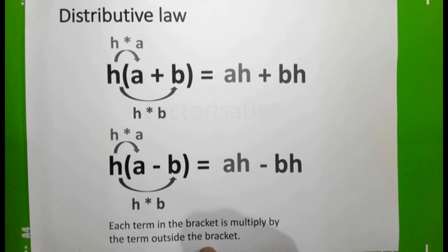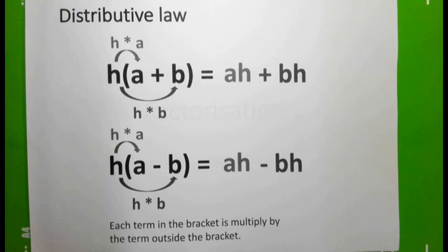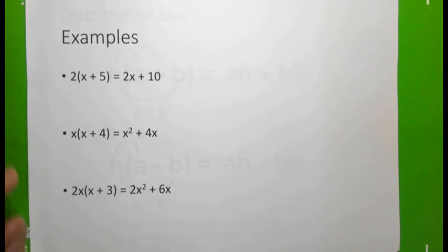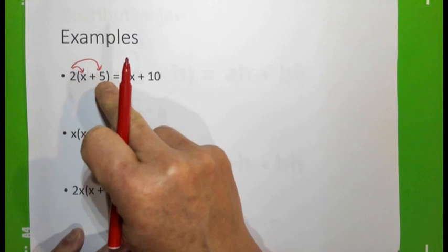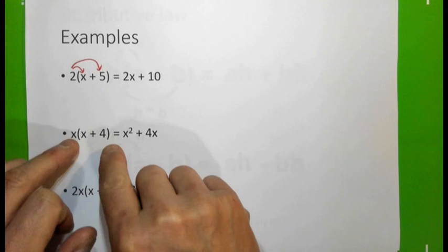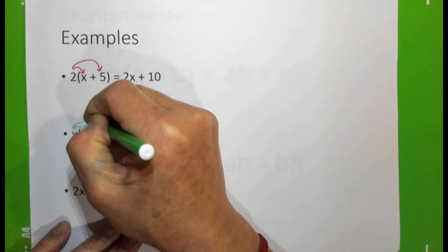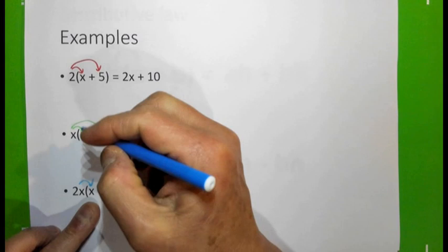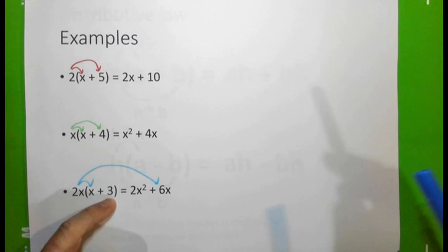Now let's have a look at some examples. Recall 2 into (x + 5): if we apply the distributive law we have 2x + 10. Similarly, if we have x into (x + 4), the distributive law gives x² + 4x. And for 2x into (x + 3), the distributive law gives 2x² + 6x, because it's 2x times x plus 2x times 3.